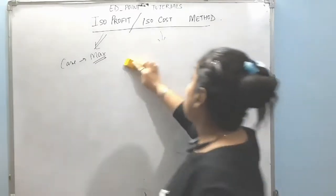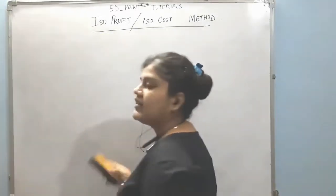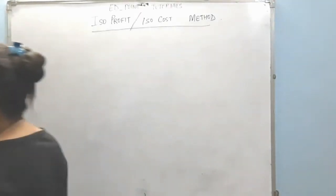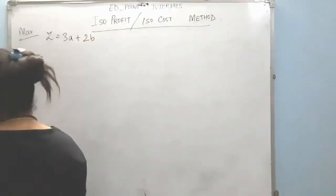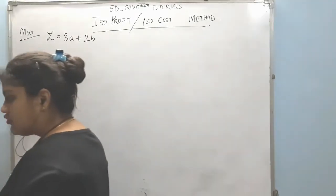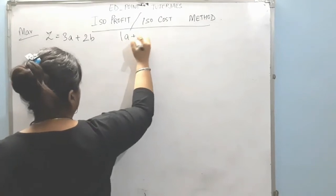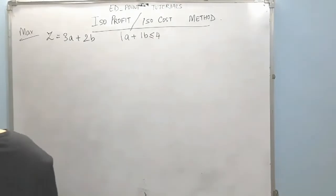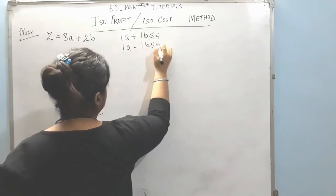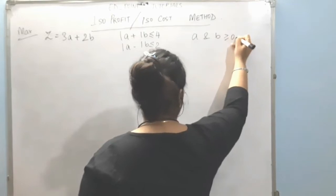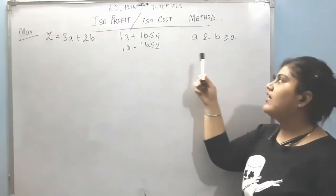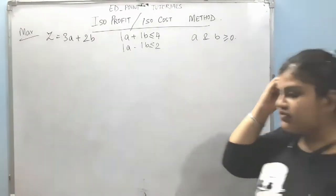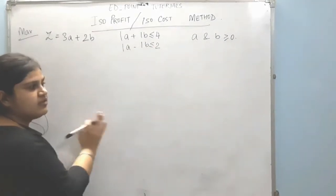We will consider the same question from yesterday and solve it using this different approach. The objective function was to maximize 3a plus 2b, with structural constraints: 1a plus 1b is less than or equal to 4, and 1a minus 1b is less than or equal to 2, with a and b greater than or equal to 0. So we have an objective function, a structural constraint, and a non-negative constraint.